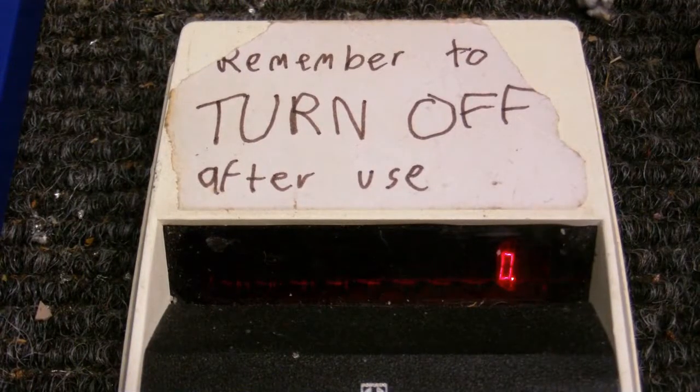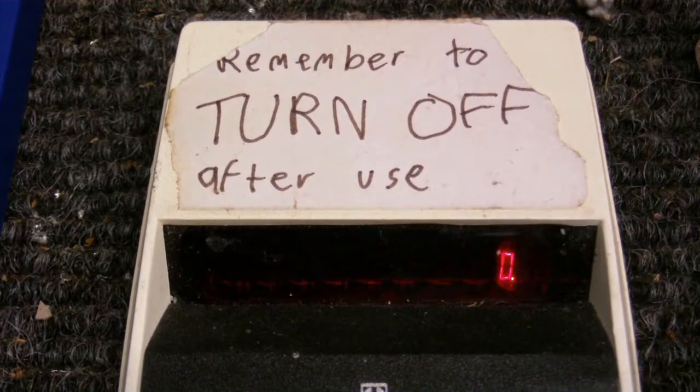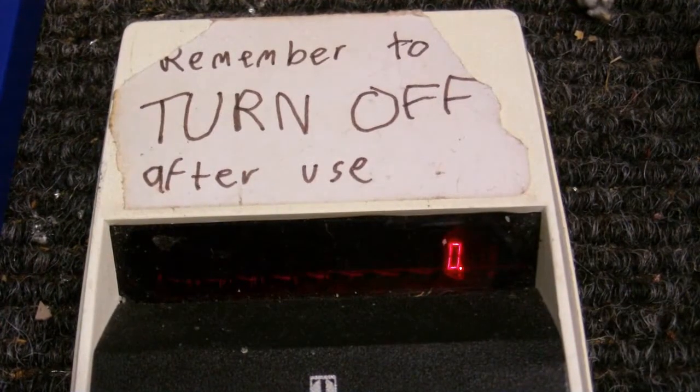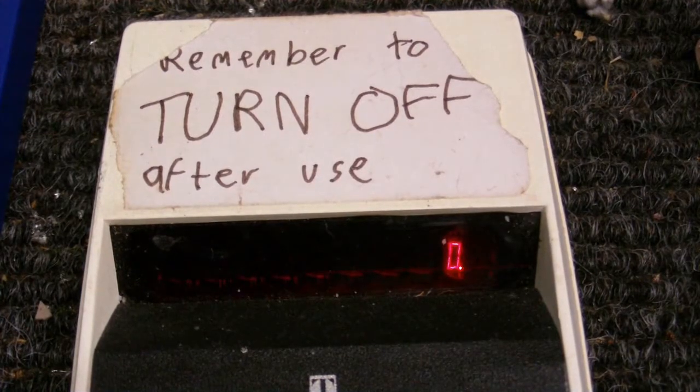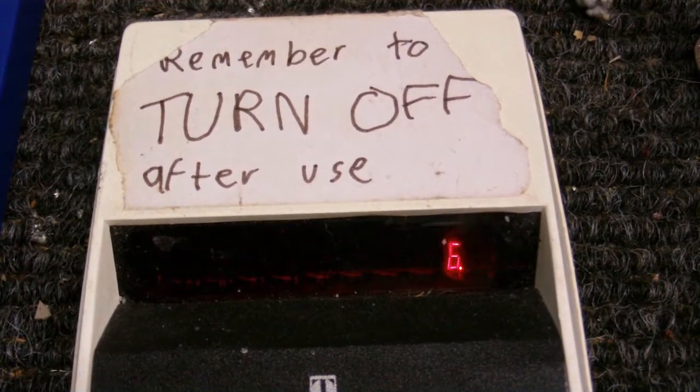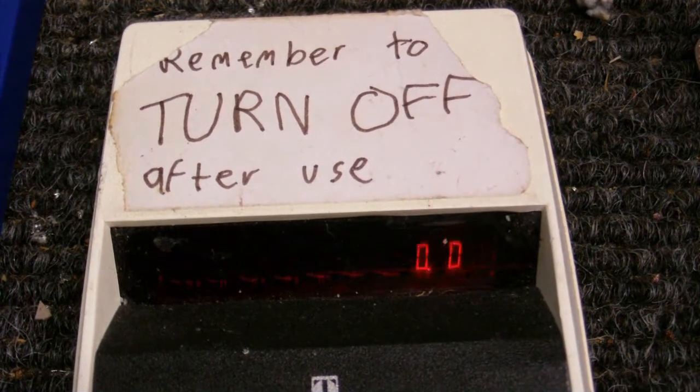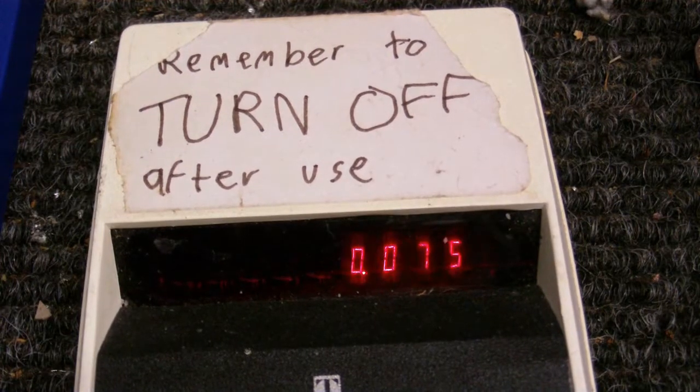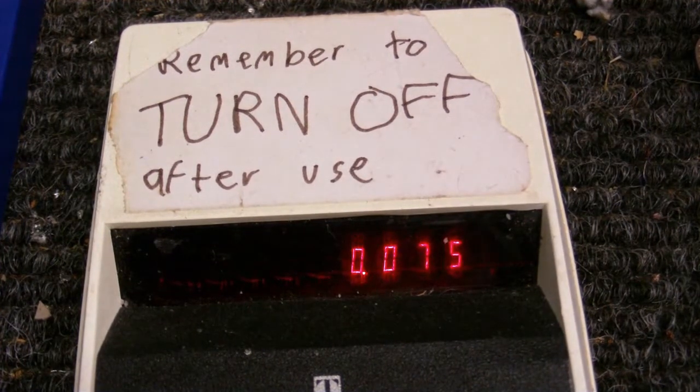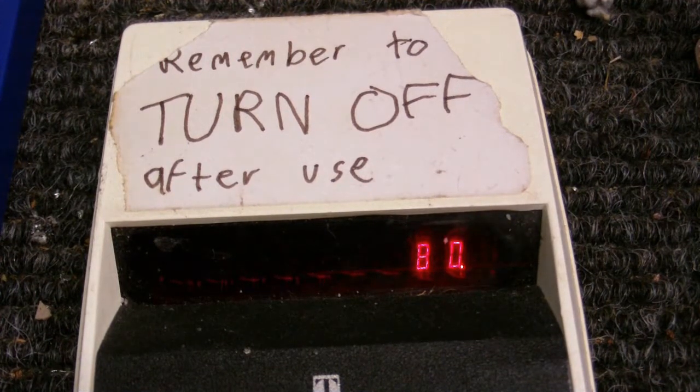Let's go to my vintage calculator and see exactly how much gain we have. We have 6 volts peak to peak, divide that by our input voltage which is 75 millivolts, and we have 80 times amplification. That's actually a lot higher than what I expected.